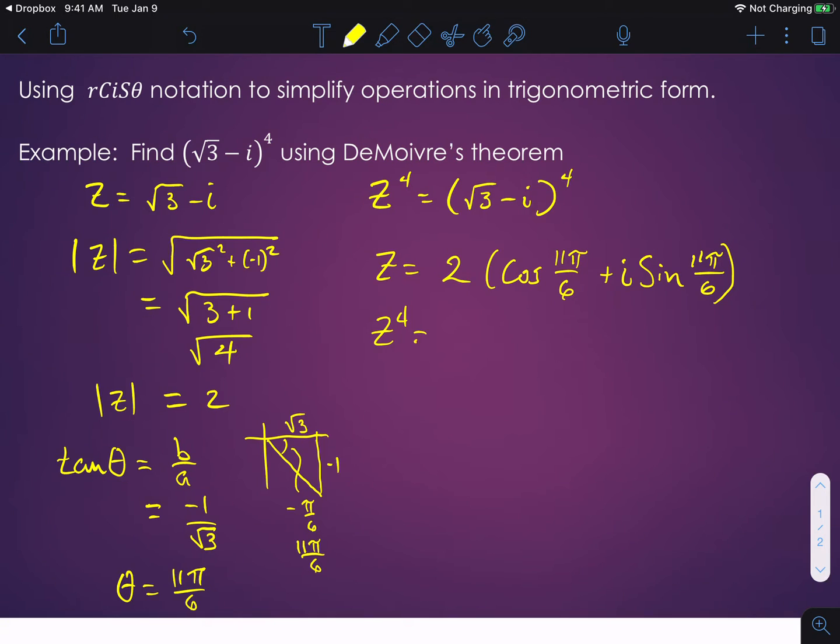And then that means that z to the fourth is going to be all of that to the fourth power. Okay, here's where cis notation comes in. We're going to say that z to the fourth can be written this way now: z to the fourth is going to equal, and I'm still going to use brackets here, 2 cis 11π/6.